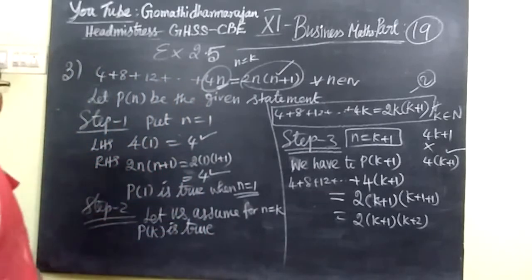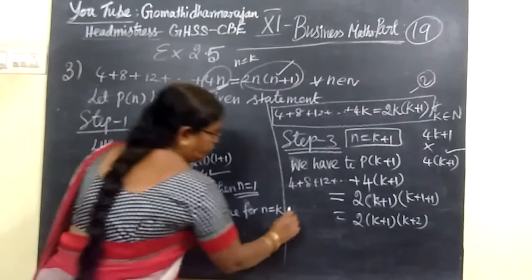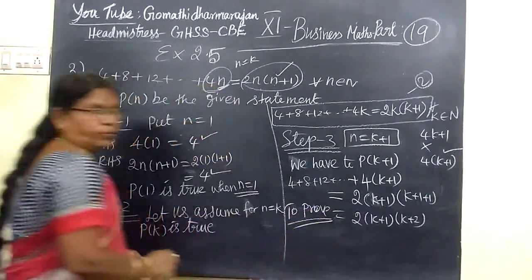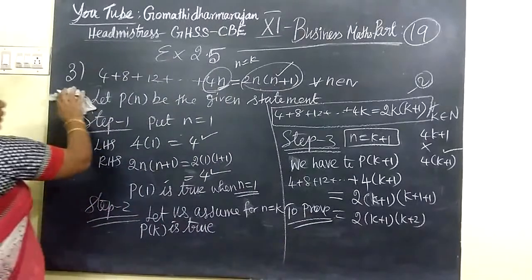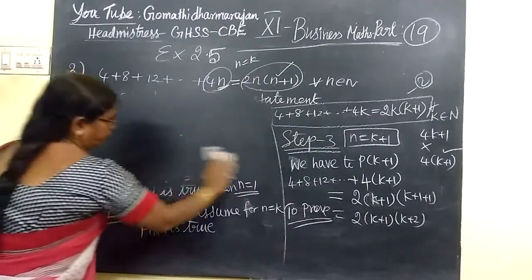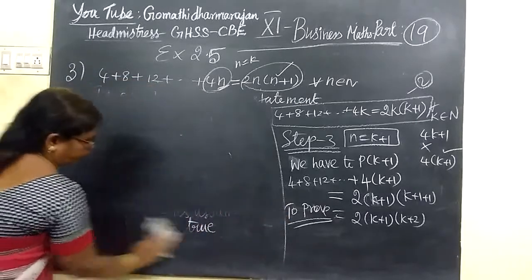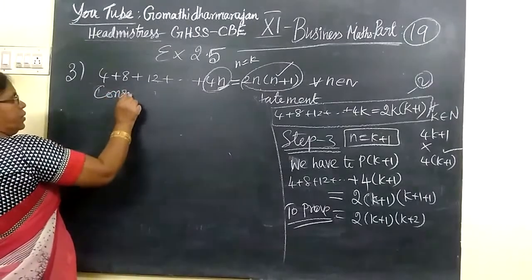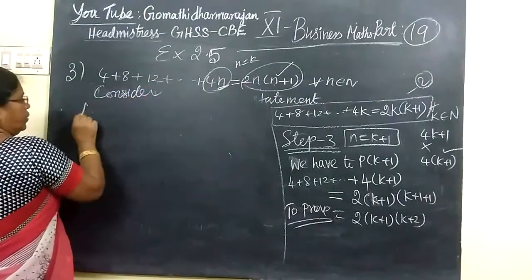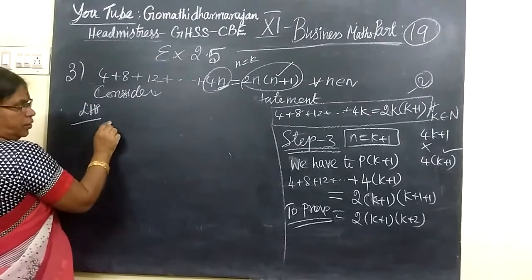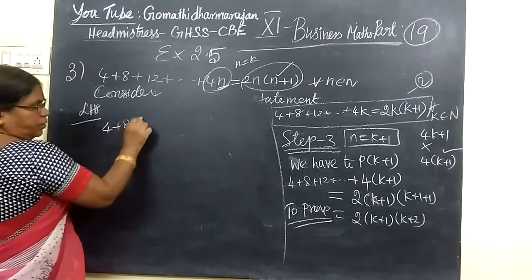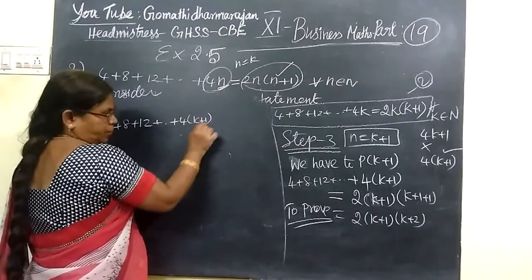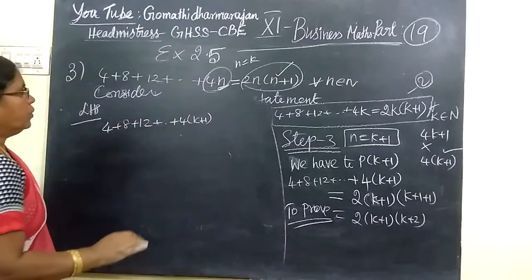I will consider this. We are to prove, this is the one to prove, this is the one to prove. So for that, now consider LHS. So consider LHS. LHS is 4, 8, 12, etcetera, 4 bracket K plus 1.